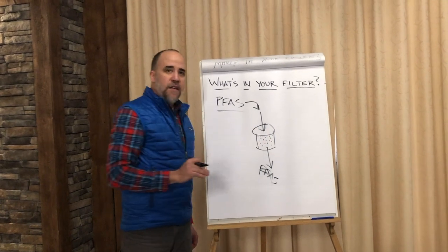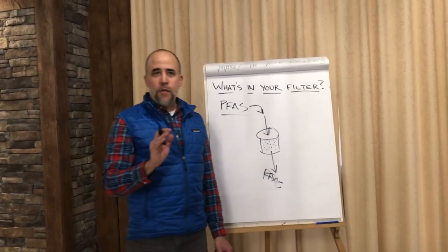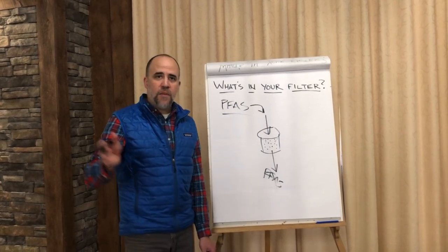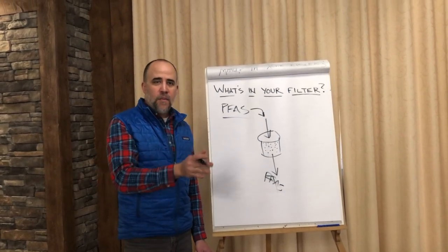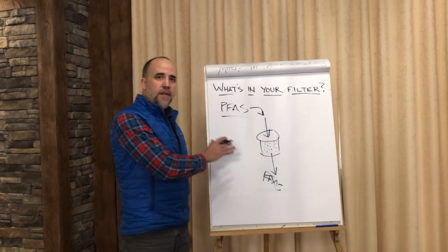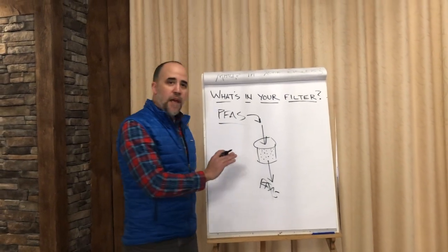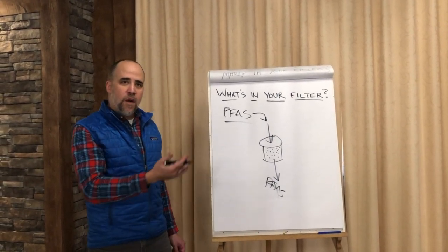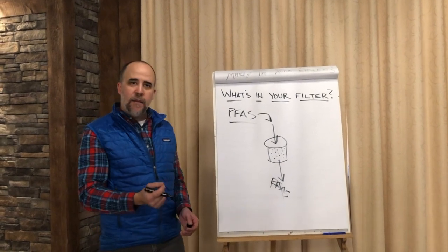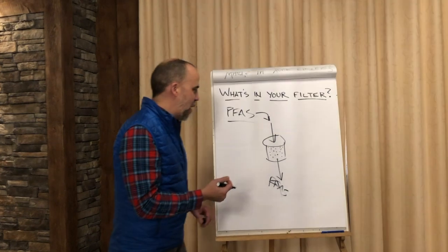The activated carbon within that filter is important to consider because they're not all created equally. Two types you'll find in the marketplace are coconut-based and bituminous coal-based. The coconut-based carbons are not well suited to this application because you have a limited time for the PFAS contaminant to diffuse into that structure. When you turn on the tap, the water flows through and it might only have a minute or two of contact time, so that activated carbon has to be able to absorb that contaminant as quickly as possible.